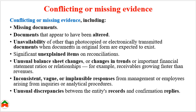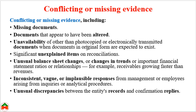Another example is unavailability of documents other than photocopied or electronically transmitted versions when original documents are expected to exist. As an auditor, if the authority does not provide the original document but instead provides a photocopy or electronic item, that indicates the possibility of fraud risk.